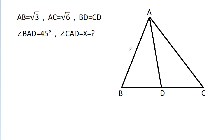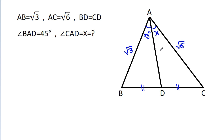In this video, we have given that AB is √3, AC is √6, BD is equal to CD, angle BAD is 45 degrees, and angle CAD is X. We have to find X.